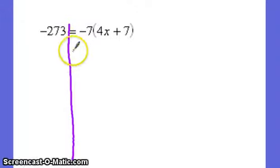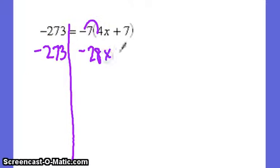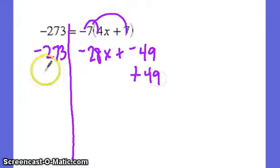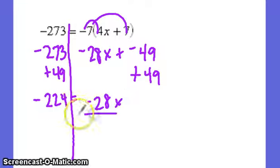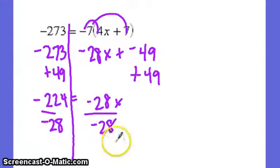Negative 273 is equal to negative 7, parenthesis 4x plus 7. So if you distribute this one, I'll do it the other way this time. If you distribute, this will be negative 28x plus a negative 49. If you add 49 to both sides, negative 273 plus a positive 49 is negative 224 equals negative 28x. Divide both sides by negative 28. And 8 is equal to x.